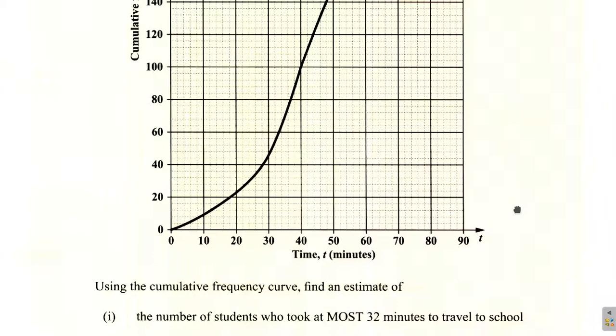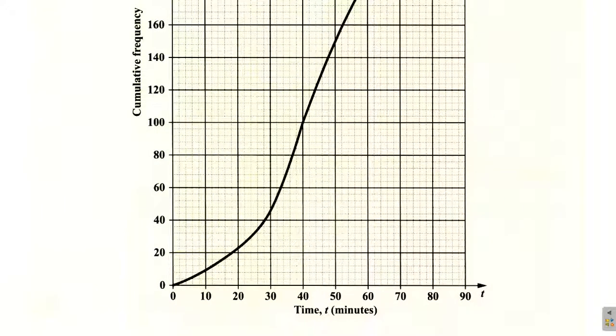At most means 32 minutes is the most that they travel to school. Here what we do, we see that each square here is divided into five small squares. So between 0 and 10, there are 2 minutes represented by each small square. So each of the small squares is 2 units.